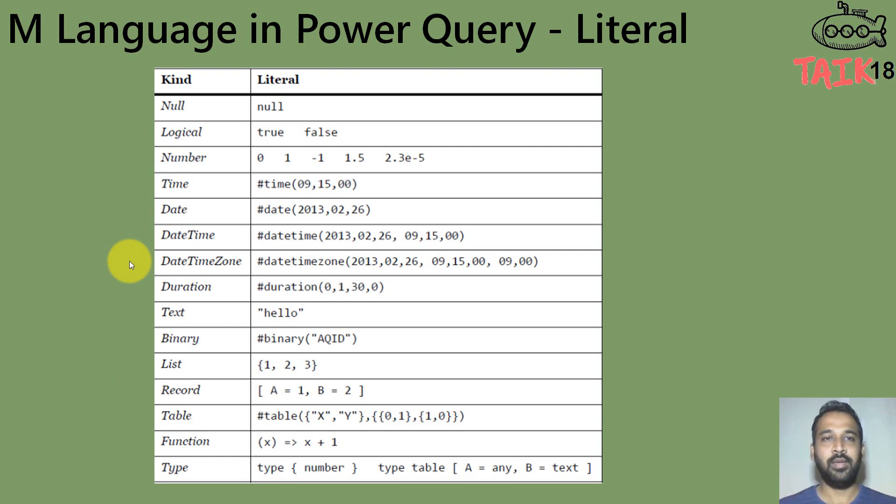So these are the literals of Power Query that if you want to use null, you can define the null like this. The logical logical values are true or false. And the number can be 0, 1, minus 1, 1.5 and these digits. And if you want to convert it to time, then you can define it like this hash time bracket hour, minute and second. And if you want to define a date, then it should be date, year, month and day. And date time is similarly like this and date time with zone.